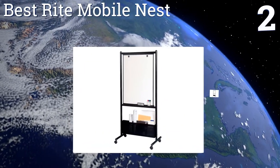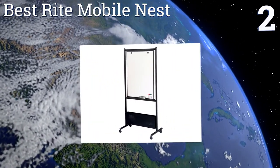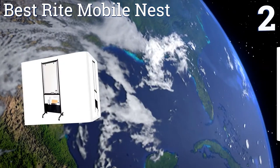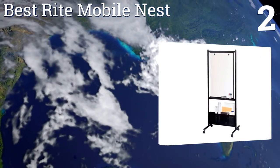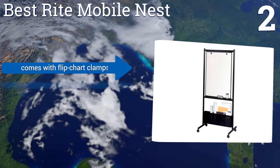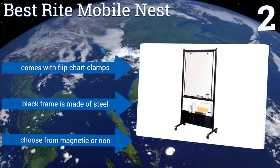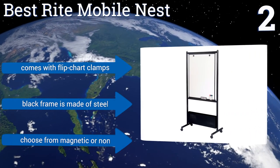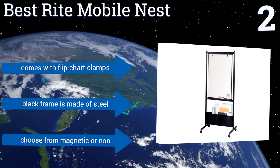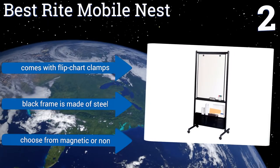At number two, if you're managing a team, the Best Ride Mobile Nest can help you keep everything in one place. This model rests on wheels, it has a caddy for storing documents, and its steel porcelain surface will not squeak, ghost, or mark. Superb as a group resource for long projects, it comes with flip chart clamps and a steel black frame. You can choose from a magnetic or a non-magnetic version.